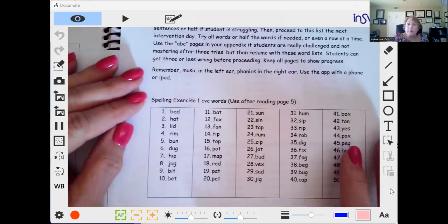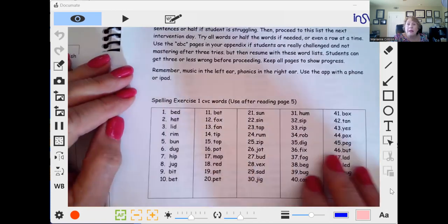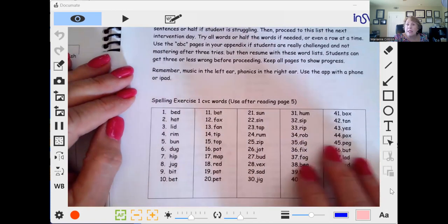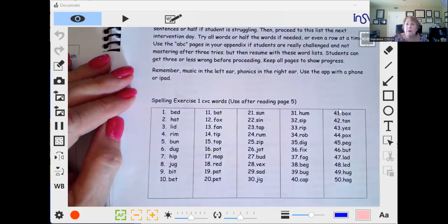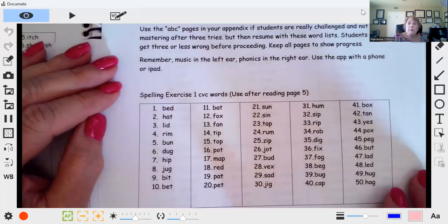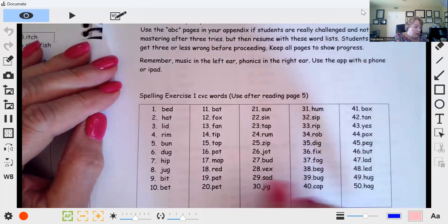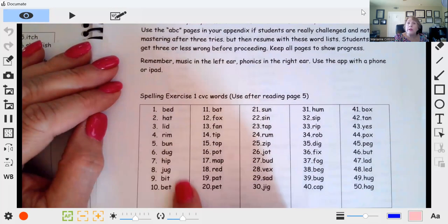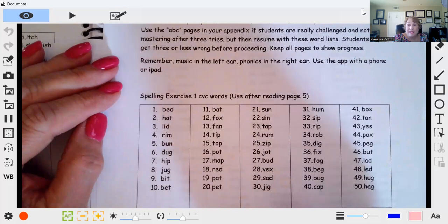What I'd like to recommend is do a baseline, see what the child is successful with, and then take it from there. If the child seems to know all the beginning sounds but misses the vowel or misses the ending sound, then that's going to be your next strategy. Maybe you may go through each word and only have them write the vowel sound.